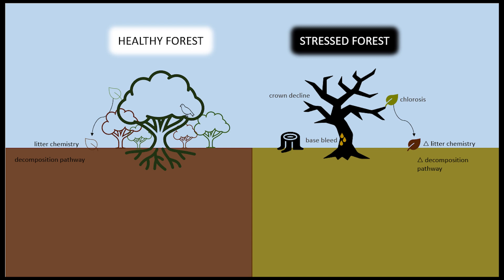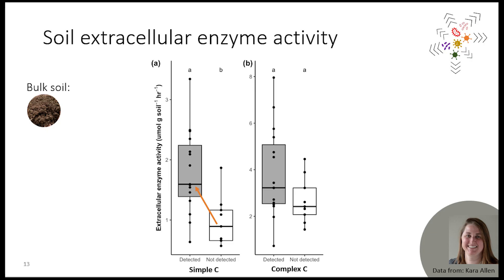What about decomposition of these leaves? That's already a more complex question. Soil decomposer organisms need enzymes to break down organic materials such as leaf litter. Cara found that the activity of enzymes used to decompose simple carbon compounds was higher at trees where a pathogen was detected. And enzymes involved in decomposition of complex carbon compounds, although less effective, showed a similar pattern and also seemed to be a bit more active at trees where a pathogen was detected.